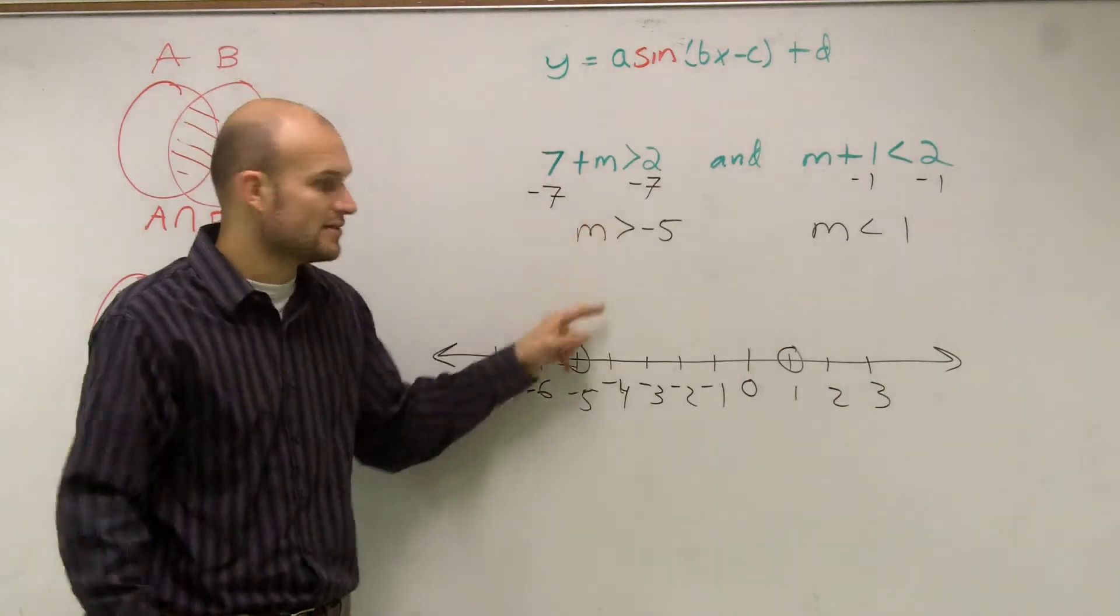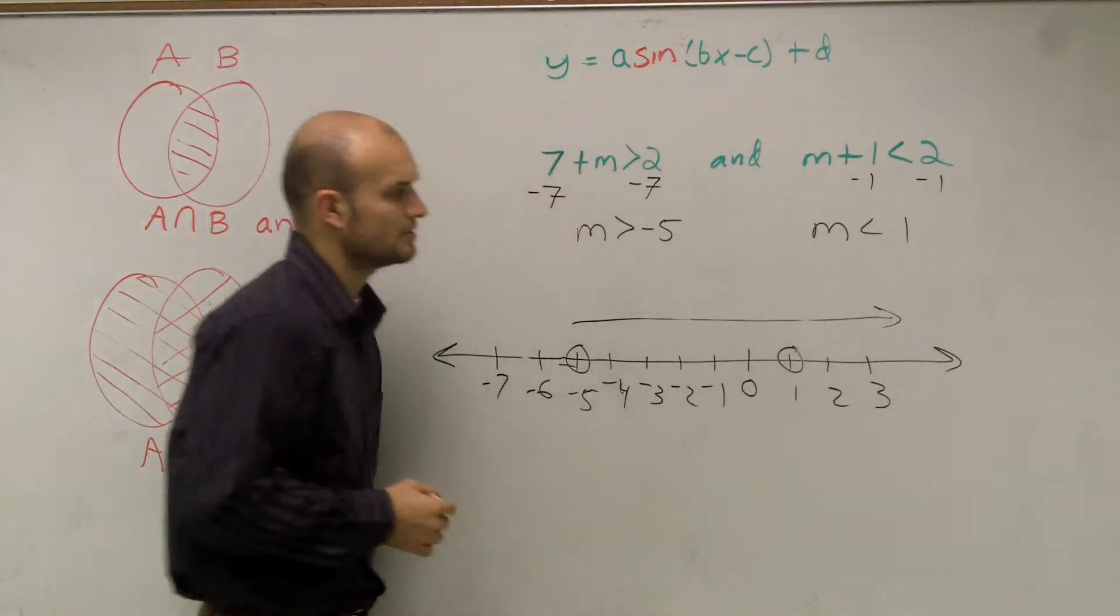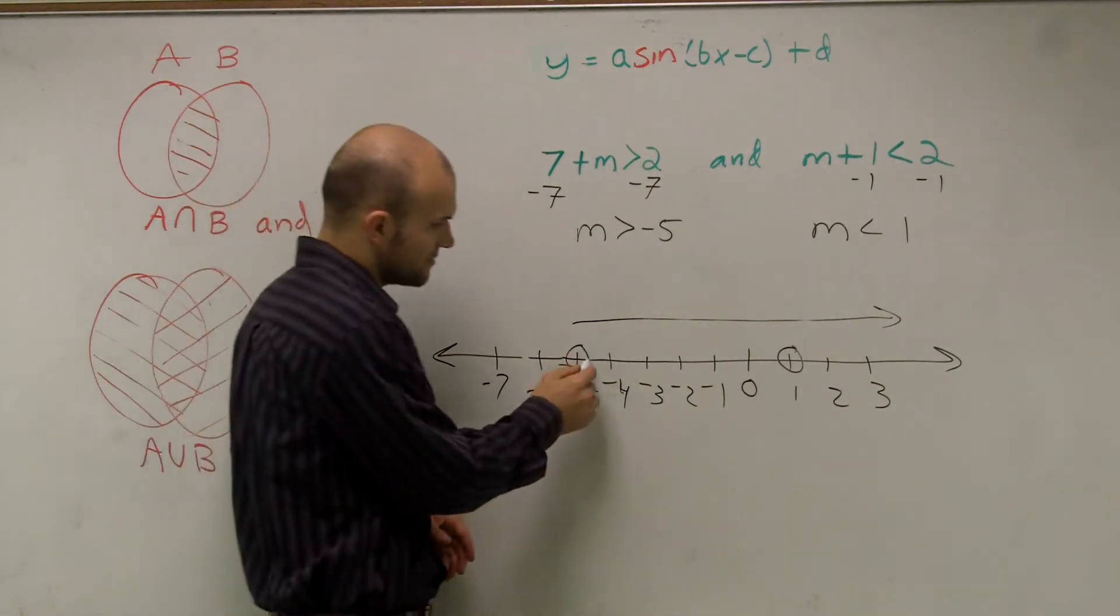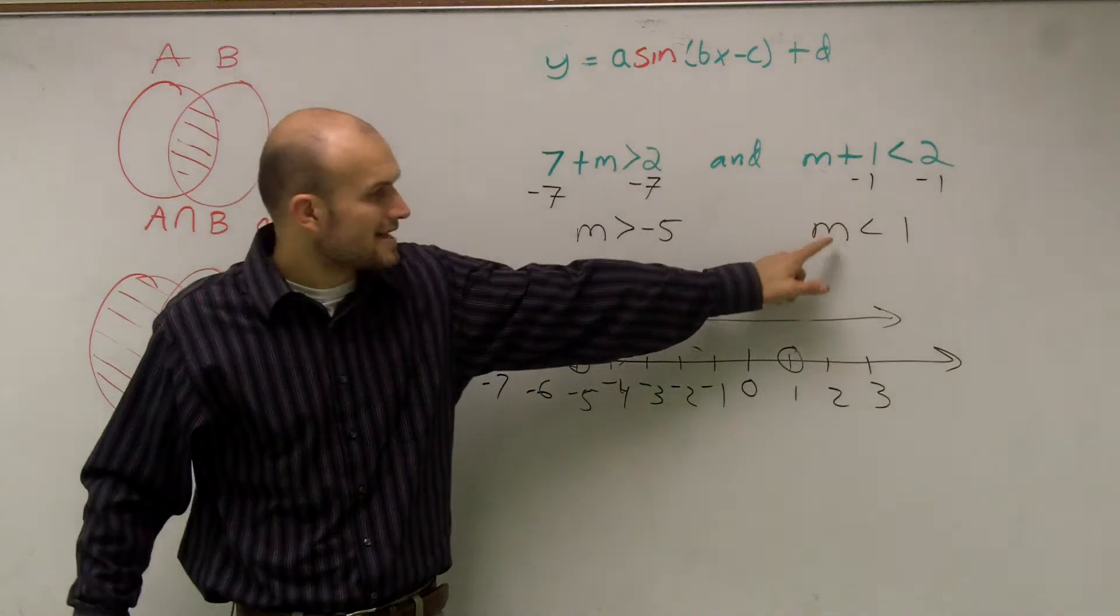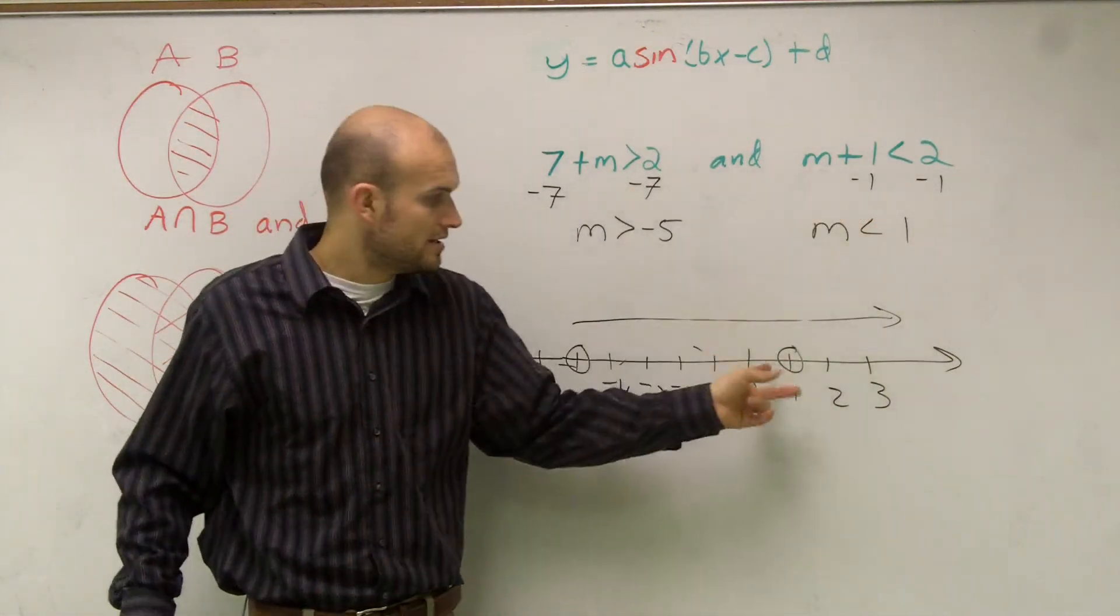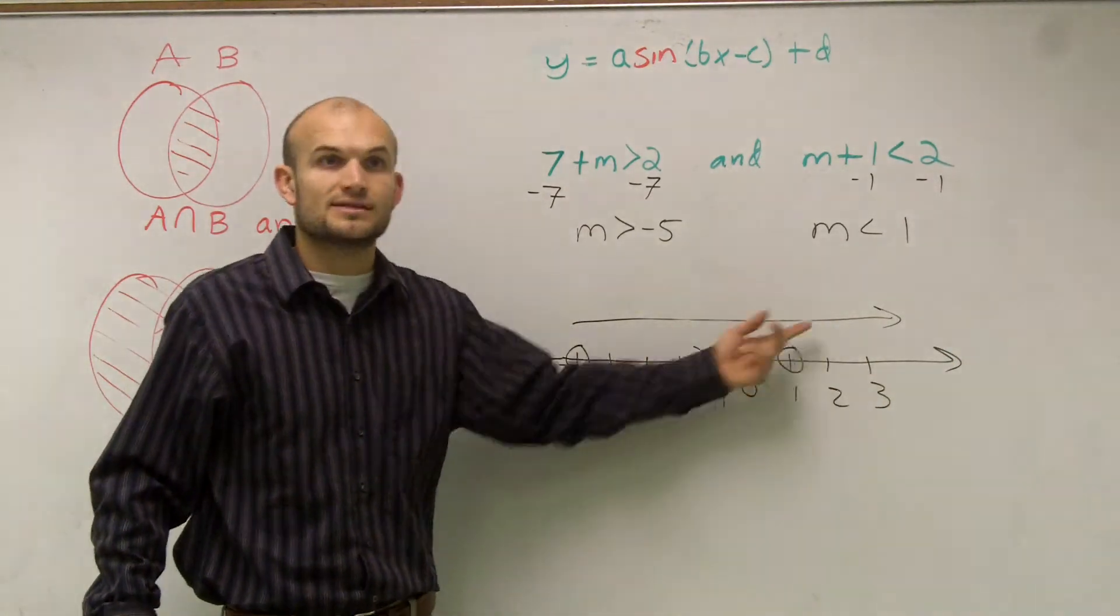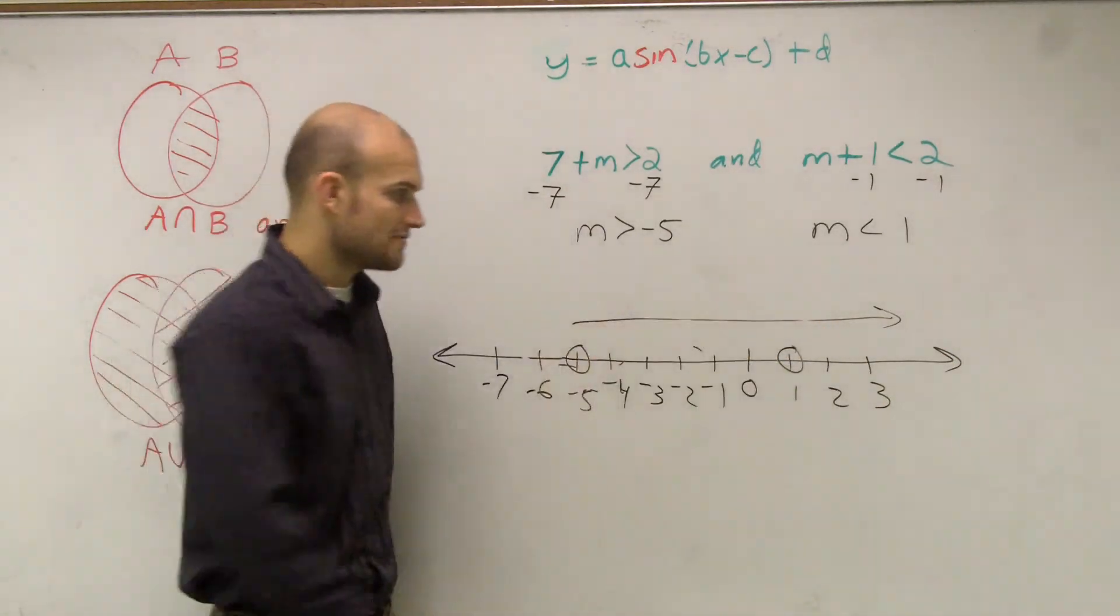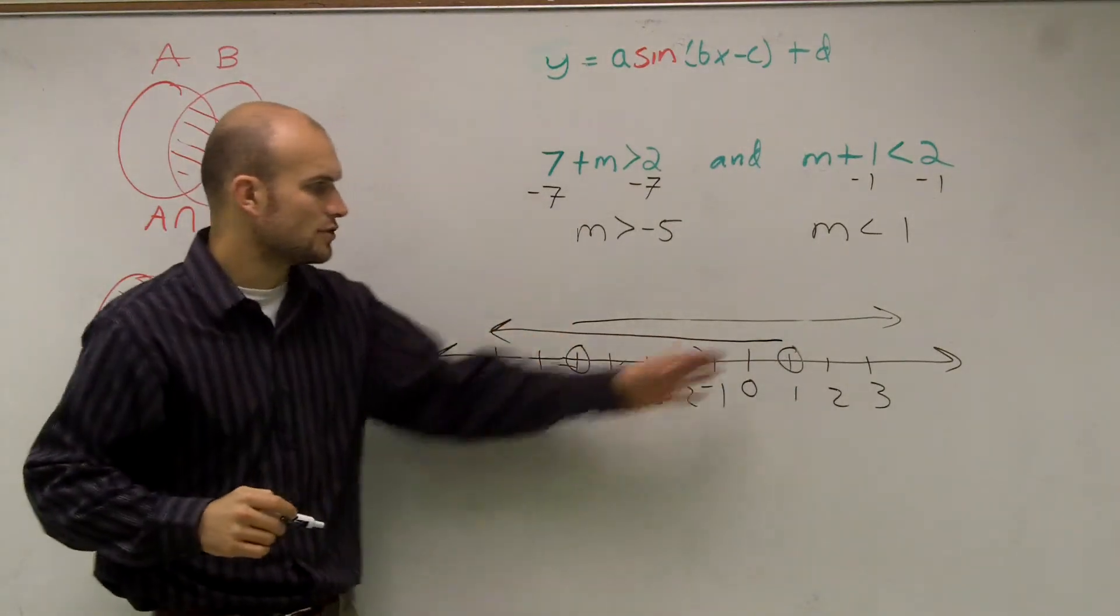So therefore, the numbers that are greater than negative 5, I would graph that looks like this, right? My graph would be here going all the way over there. Then I look at here, it says m is less than 1. So what are the numbers that are less than 1? Is that going to be the numbers going to the right or the numbers going to the left? The numbers going to the left, right? So that graph would go this way.